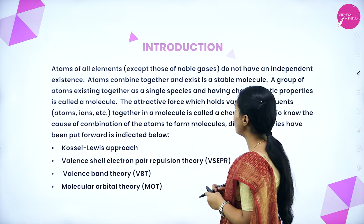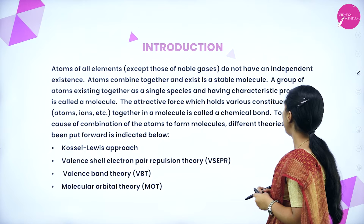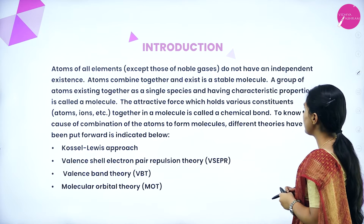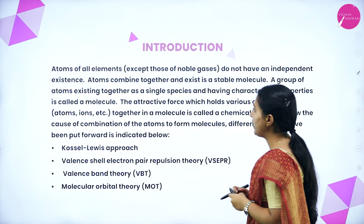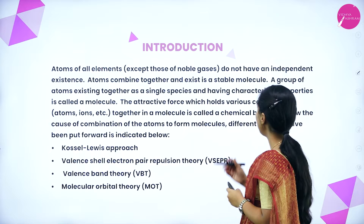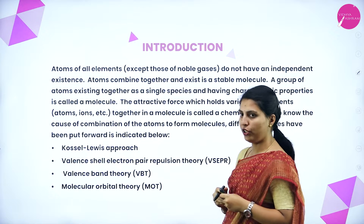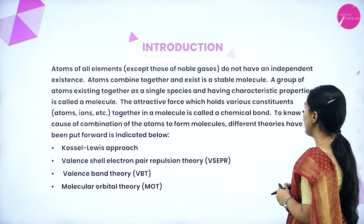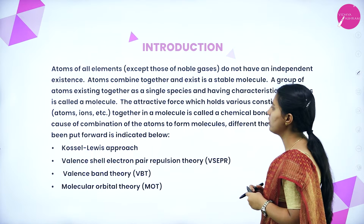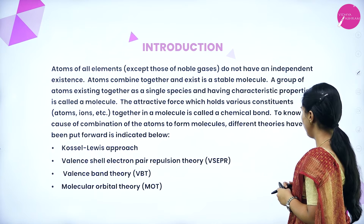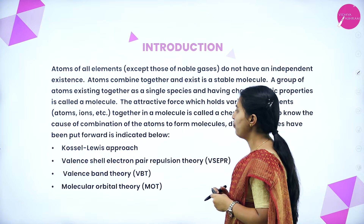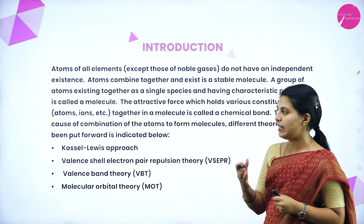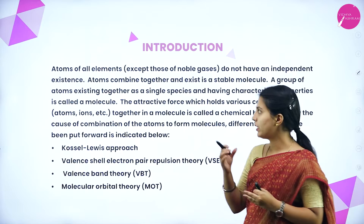Atoms of elements except those of noble gases do not have an independent existence. Atoms combine together and exist as a stable molecule. A group of atoms existing together as a single species and having characteristic properties is called a molecule. The attractive force which holds various constituents together in a molecule is called a chemical bond. Different theories have been put forward to explain the cause of combination of atoms to form molecules. Atoms of all elements do not have any independent existence.